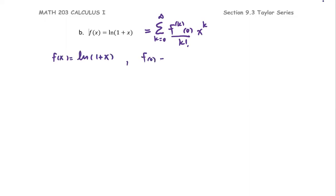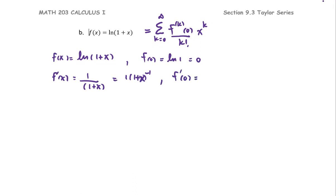The function at zero is natural log of one, or zero. The first derivative is one divided by one plus x, or written as one plus x to the power negative one. Then f prime at zero is one. The second derivative f double prime is negative one multiplied by one plus x to the power negative two, and f double prime at zero is negative one.